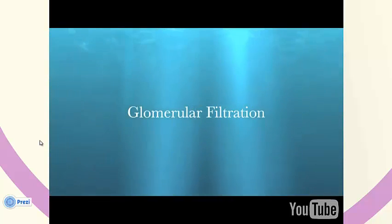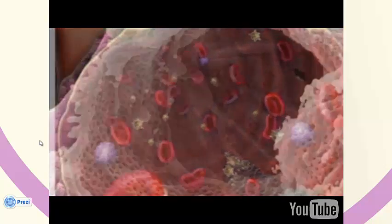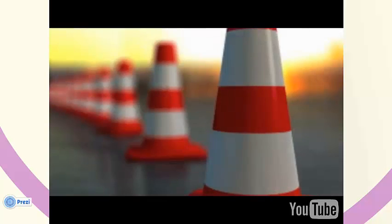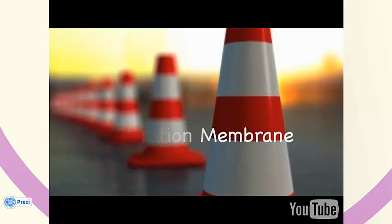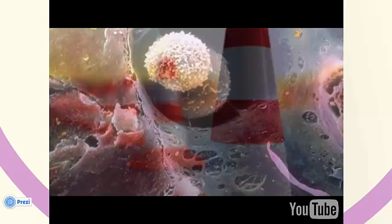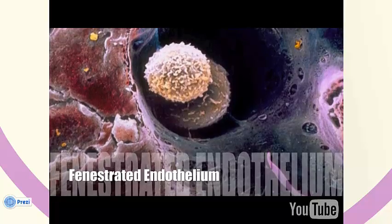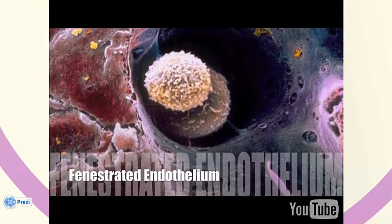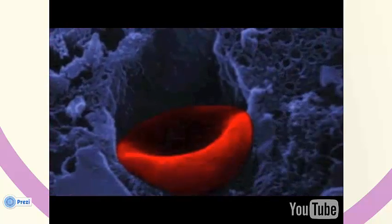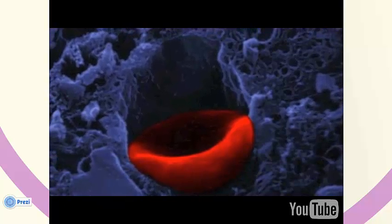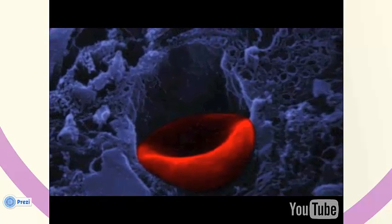Glomerular filtration is the process in which water and solutes in the blood plasma pass from the capillaries of the glomerulus into the capsular space of the nephron. The fluid passes through three barriers that make up the filtration membrane during glomerular filtration. The first barrier is the fenestrated endothelial cells of the capillaries. The glomerular capillaries are made up of endothelial cells with large filtration pores, similar to the fenestrated capillaries studied earlier when examining the cardiovascular system.